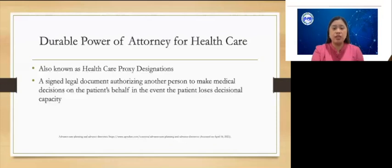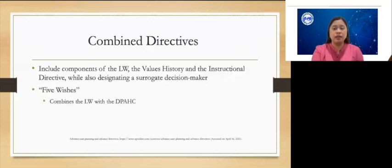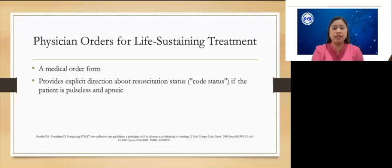On the other hand, a durable power of attorney for health care is a signed legal document authorizing another person to make medical decisions on the patient's behalf in the event the patient loses decisional capacity. Increasingly, advanced care planning documents are being developed that include components of the living will, the values history, and the instructional directive, while also designating a surrogate decision-maker. One example of this, known as Five Wishes, combines the living will and the durable power of attorney for health care. Although not an advanced directive, physician orders for life-sustaining treatment and similar medical order forms provide explicit direction about resuscitation status if the patient is pulseless and apneic.